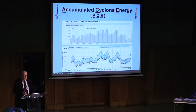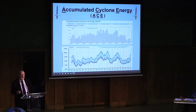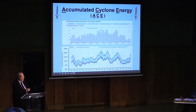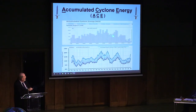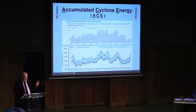Here we have a concept called accumulated cyclonic energy. What this does is take wind speed and atmospheric pressure, measured every six hours. Since around 1970, we don't really have any discernible trend. And over the last 15 years, as CO2 is still increasing, accumulated cyclonic energy is decreasing — another inverse correlation, but not necessarily causation.